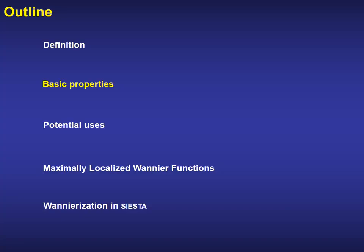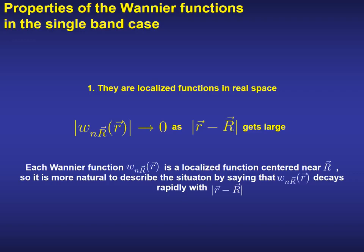These Wannier functions display very interesting properties that can be used afterwards. As it was said before, the Wannier functions are localized in real space. We can think of a Wannier function associated with a band N as a function peaked in a given unit cell, represented by the capital R in the subindex. Even if they are peaked in a given unit cell, the tails can extend to neighboring unit cells. The value of the Wannier function decays as we move away from the unit cell where it is defined.